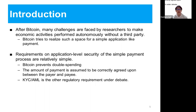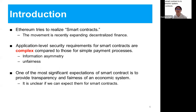There are ongoing debates about the know-your-customer and anti-money laundering regulatory requirements. On the other hand, Ethereum tries to realize smart contracts, which is a growing topic within decentralized finance. Application level security requirements for smart contracts are so complex compared to those of simple payment processes. One of the most significant expectations of smart contracts is to provide transparency and fairness of an economic system. While this has been realized for Bitcoin and cryptocurrency, it is unclear if we can expect the same for smart contracts, which is how we set our research questions.